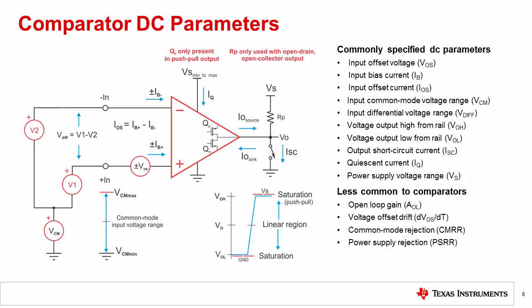Other parameters may be specified, such as open loop gain, voltage offset drift, common mode rejection, and power supply rejection, but they are typically less critical to a comparator than the previous specifications and are considered less often.